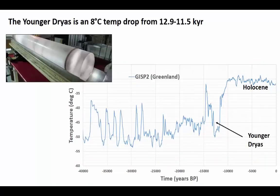The Younger Dryas is a climate event that took place from about 12,900 to 11,500 years ago. It was first noticed by paleobotanists who observed the strange advance and retreat of flowers in northern Europe. However, in the mid-90s, the first ice cores were drilled on the Greenland ice cap. By analyzing isotopes in the layers of this ice, scientists are able to reconstruct temperature fluctuations at very high resolution over the last 40,000 years in Greenland.